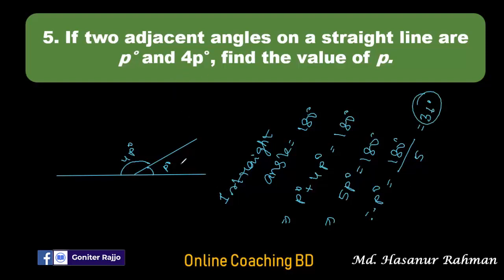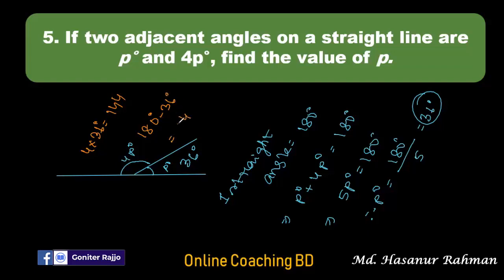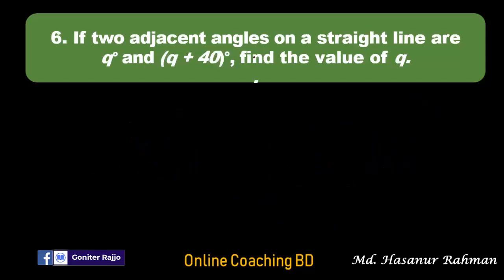If p is 36 degrees then the remaining part will be 4 multiplied by 36 degrees. 4 times 36 is 144 degrees. Or if we subtract 36 degrees from 180 degrees we get the same answer: 144 degrees. So we can say 144 degrees is supplementary to 36 degrees, and 36 degrees is supplementary to 144 degrees.